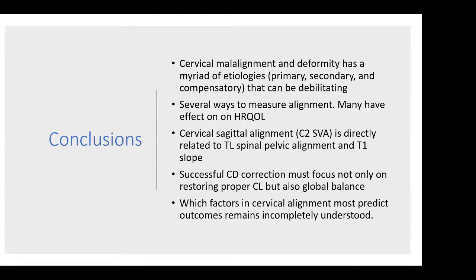In conclusion, cervical malalignment and deformity have a myriad of etiologies — primary, secondary, and compensatory — that can be debilitating. There are a number of different ways to measure alignment, and our ability to be nuanced in terms of global and focal alignment measures has been increasing over the years. Most of these do have an effect on health-related quality of life measures and are important to evaluate preoperatively. Cervical sagittal alignment is directly related to the cervicothoracolumbar spinal pelvic alignment and T1 slope and should be considered as a unit. Successful deformity correction must focus not only on restoring proper cervical lordosis, but also on maintaining global balance and considering the cervical deformity in light of the entire patient. The factors in cervical alignment that best predict outcomes remain under study, and this is certainly an area of active research.